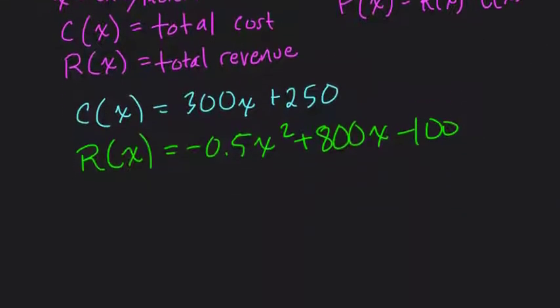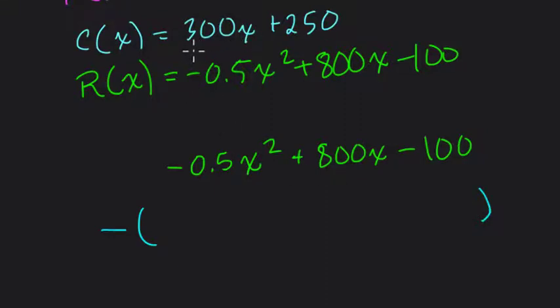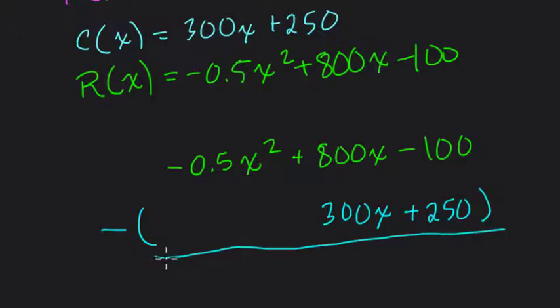And we're subtracting these two, so let's do that. So I'm going to rewrite it a third time just to line things up really nicely. So negative 0.5x squared plus 800x minus 100. And then we're subtracting minus. I'll use parentheses here because I want to distribute the subtraction sign. There are no terms in c of x with x squared. So the first term, 300x, I'm going to line up with 800x. And the 250, I'm going to line up with the 100, the negative 100, above it.